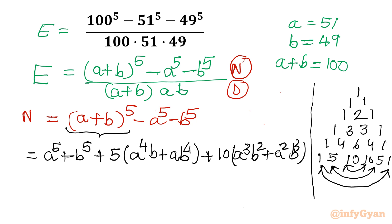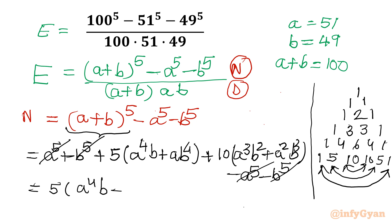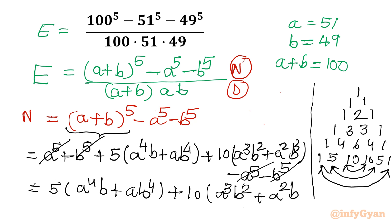After that I need to write minus A power 5 minus B power 5 — this is our numerator. So we can easily cancel those two terms. What we have left is: 5 times A power 4 B plus A B power 4, and in the second bracket 10 times A cube B square plus A square B cube.